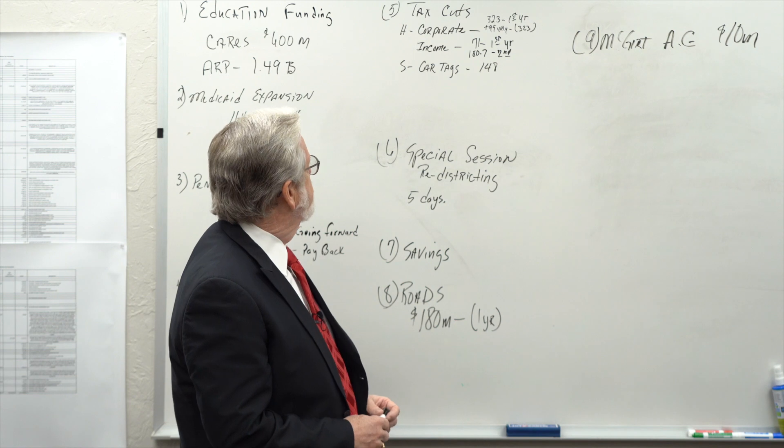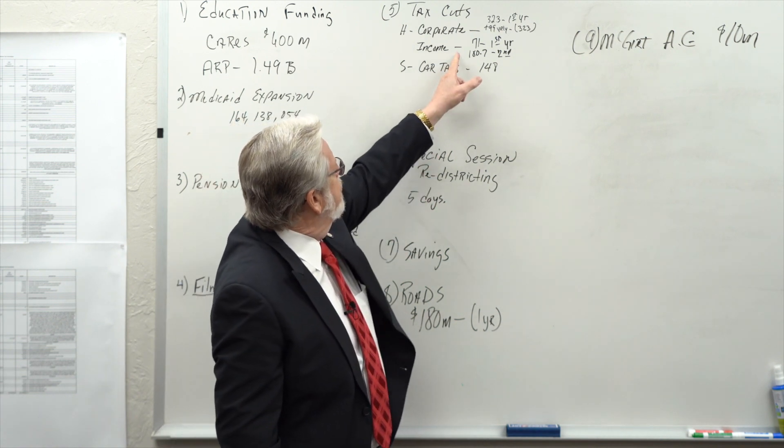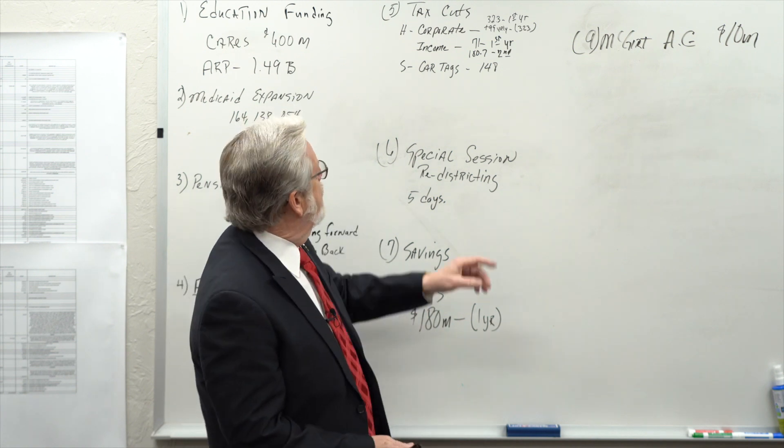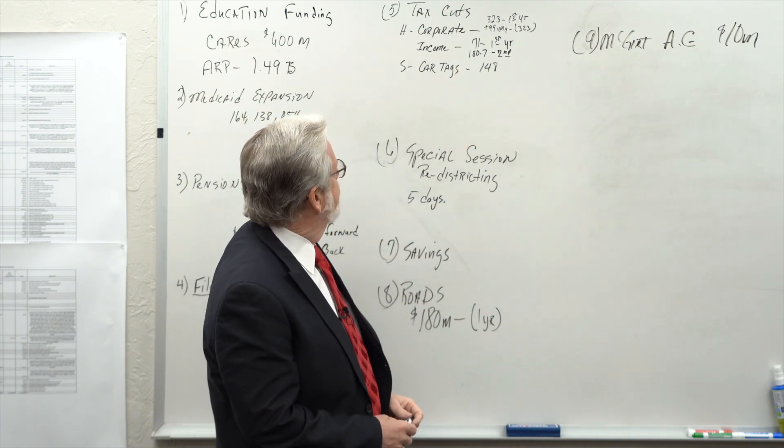If we did the quarter-point income tax reduction, it would cost our budget about $71 million this year and be about $180.7 million the second year.